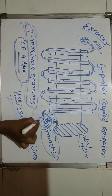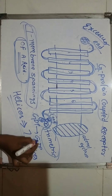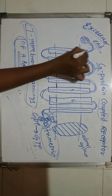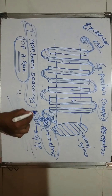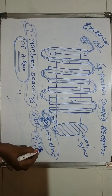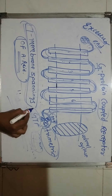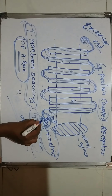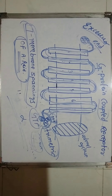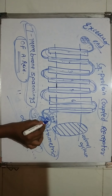When the signal reaches the G-protein, the GDP attached to the alpha subunit is replaced by GTP. The alpha unit was in the inactive stage when it was attached to GDP. As soon as GDP is replaced by GTP, the alpha unit becomes activated, and when it becomes activated, it detaches from its beta and gamma subunits.